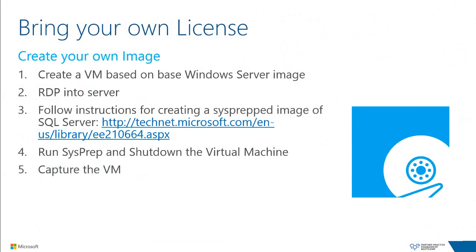Here are the steps to create your own SQL Server image: Create a virtual machine based off of a Windows Server base image, open and log in with remote desktop, follow the instructions for creating a sysprepped image of SQL Server, run sysprep and shut down the virtual machine, then click the capture button in the portal and give it your image name.